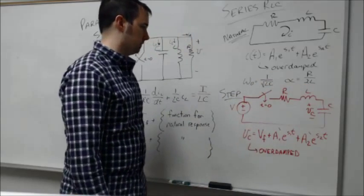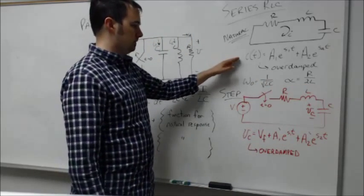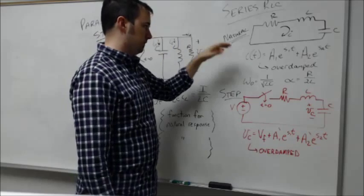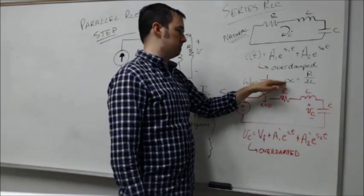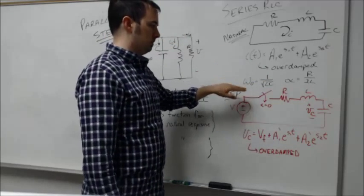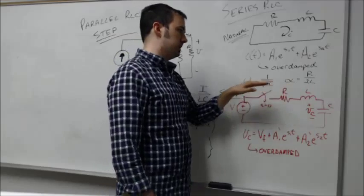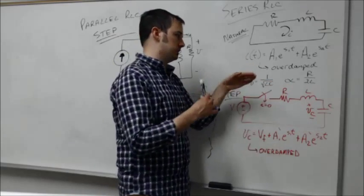These were not too much different from what we had seen with the parallel case, just accounting for this primary effect here. And again, you still have to make the comparison between omega naught and alpha in order to determine which of the three different conditions you'll be working under, and then you'll have to work with that specific solution.